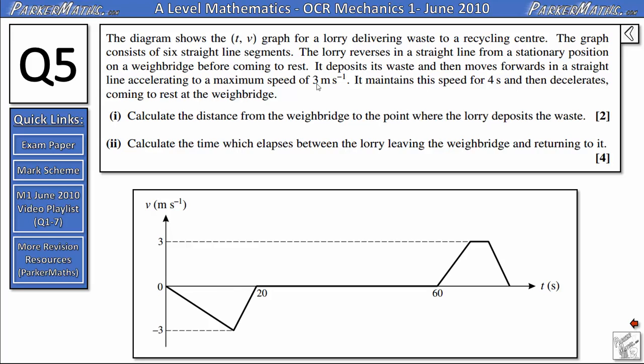So if we read part of the question again, it says the lorry reverses in a straight line from a stationary position on a weighbridge before coming to rest, and then it deposits the waste. So we're just looking at this first section of the graph here between 0 and 20 seconds.